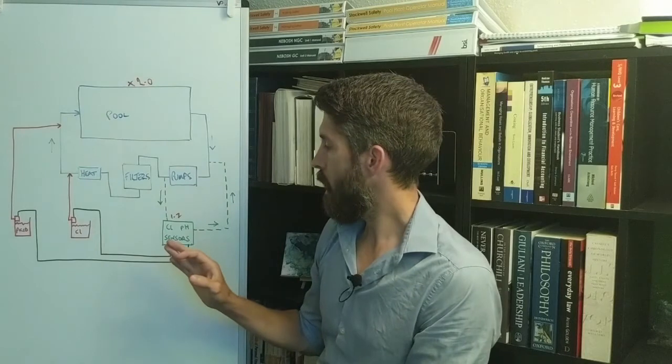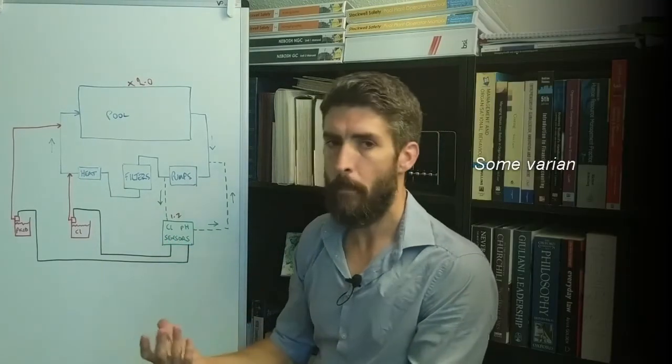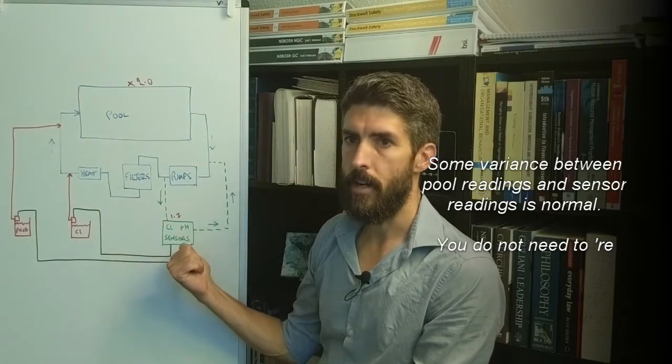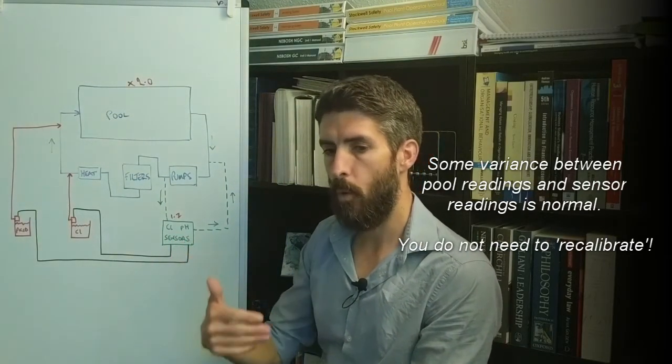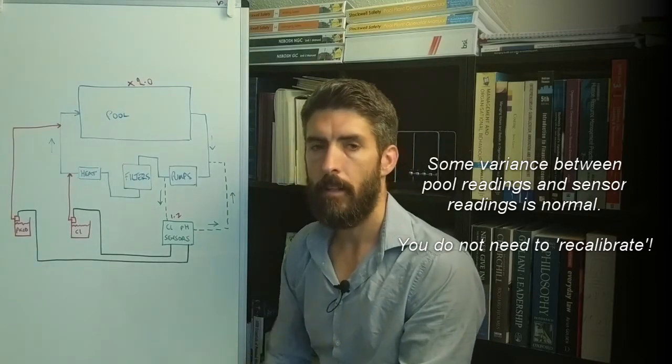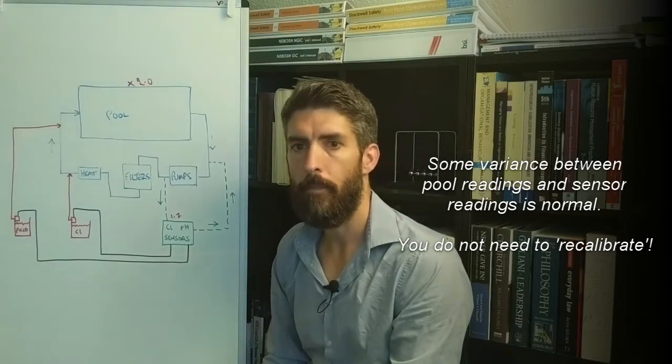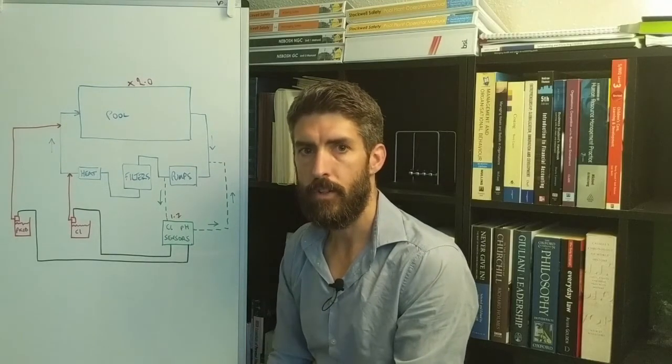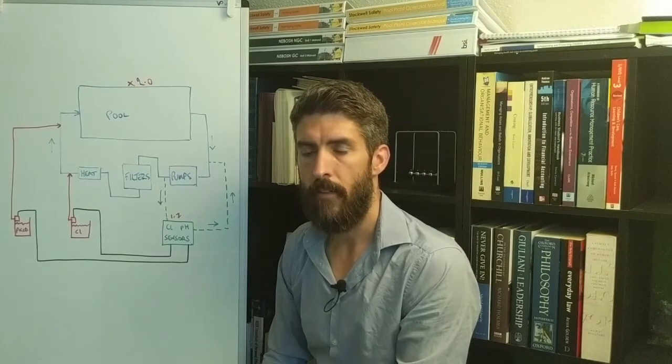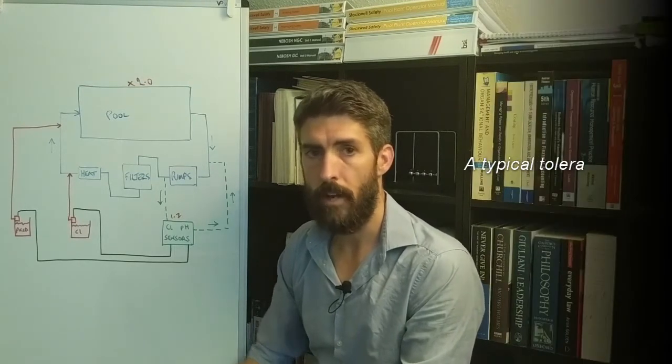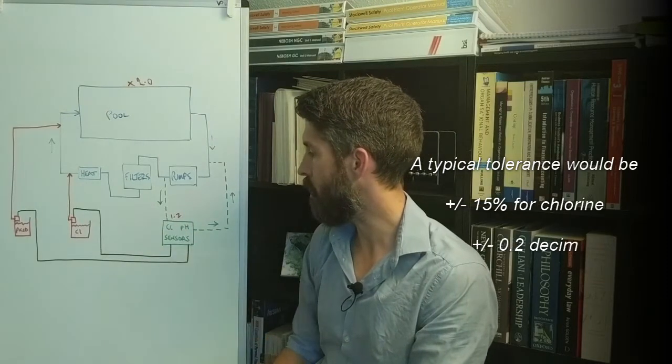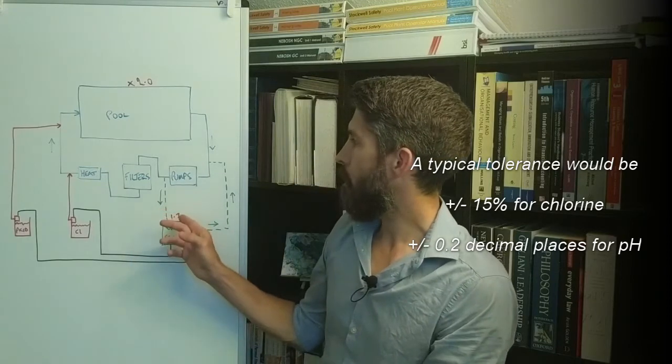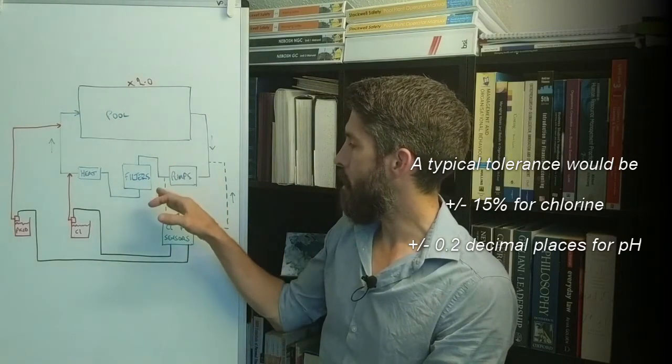Well the thing to do would be to leave it alone really, because that type of variance, I mean it would depend on, have a look at the manufacturers information for the sensors and they will have within their information, their instruction manual, they'll have a typical variance to be expected, a tolerance. And if it goes above or below that tolerance then fine, go ahead and recalibrate the sensors if that is indeed what is required.